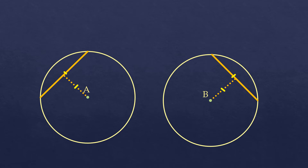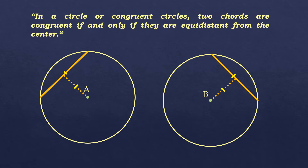Our basis is this theorem: in a circle or congruent circles, two chords are congruent if and only if they are equidistant from the center. Since it's if and only if, the vice versa is also true — if two chords are congruent, that means they are equidistant from the center.